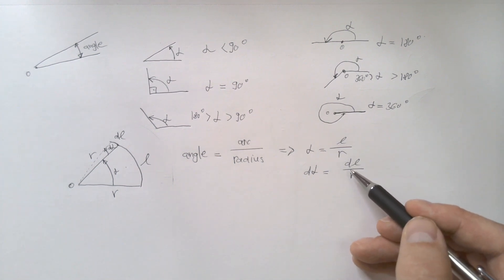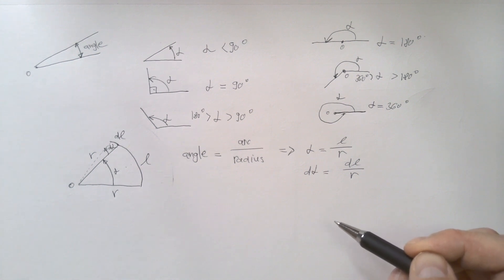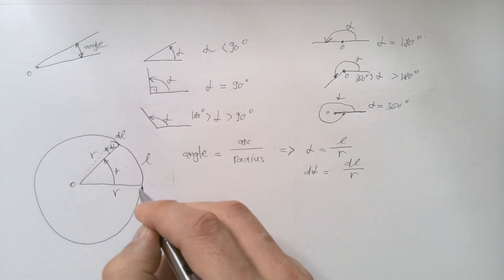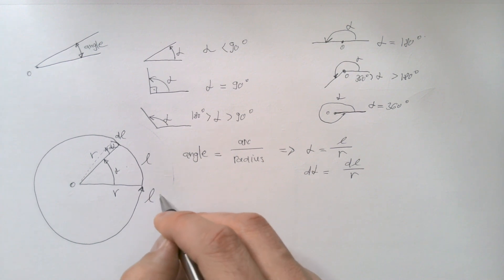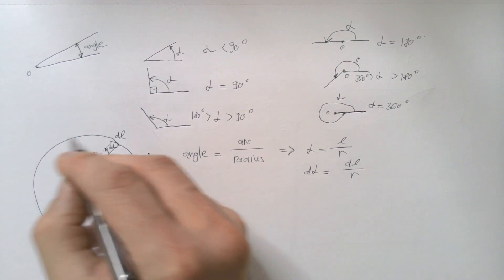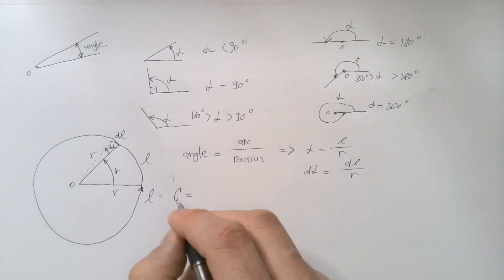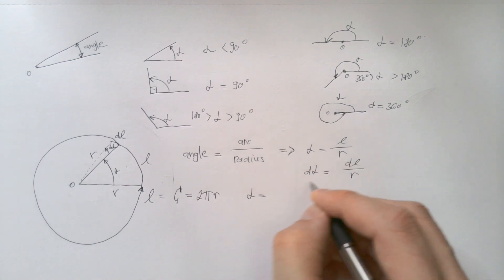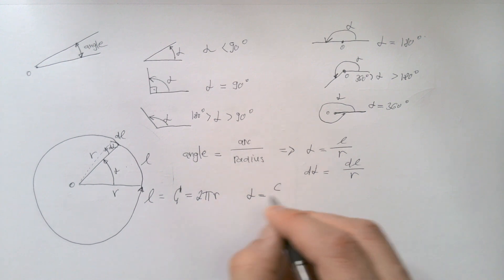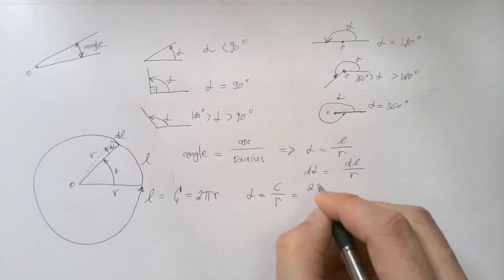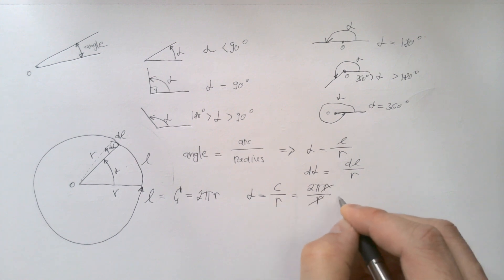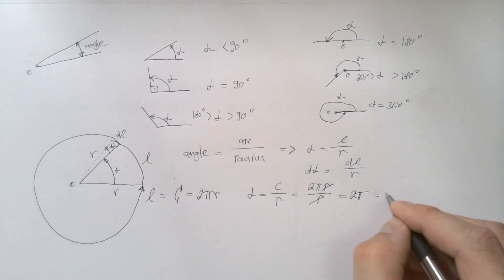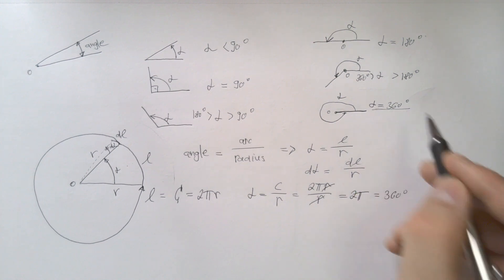We can immediately see from here, of course, that the full angle is 2π. If I go all the way around, then my L is equal to C, which is the circumference of a circle, and we know that circumference of a circle is 2πR. Therefore, alpha is equal to L divided by R, and that in this case is C divided by R, which is 2πR divided by R. R cancels, and I get that the full angle is 2π, which, if you want in degrees, is 360 degrees. Therefore, π is 180 degrees, π over 2 is 90 degrees.